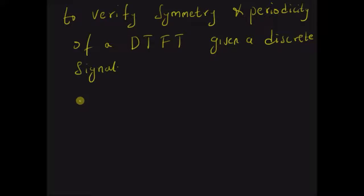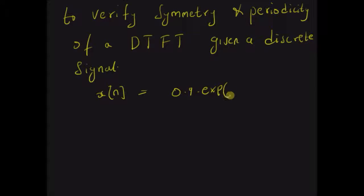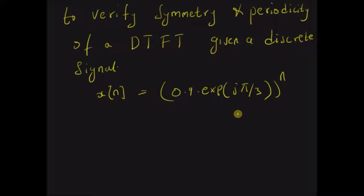Specifically, we are going to look at an example. Given the following signal x(n) = 0.9 * e^(jπ/3), raised to the power n, this signal is a complex-valued signal and the values of n are from 0 to 10. Note that n is an integer. Given this signal, we want to first find the DTFT and verify its properties using a Python plot.